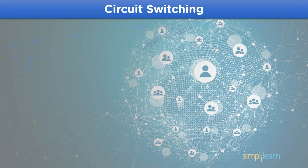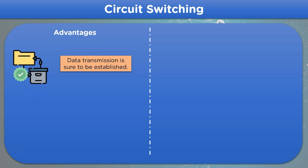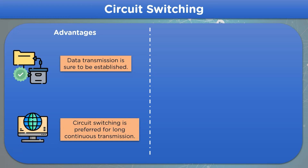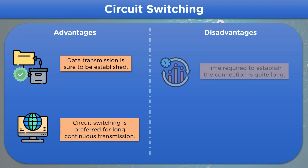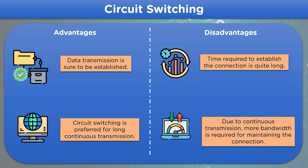Let's look at some advantages and disadvantages of circuit switching. For advantages: data transmission in circuit switching is guaranteed due to the predestined path, and circuit switching is preferred for long and continuous transmission of data due to the pre-established route. For disadvantages: the time required to establish the connection is quite long, and due to continuous transmission, more bandwidth is required for maintaining the connection.